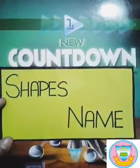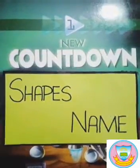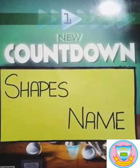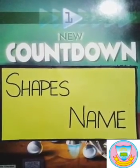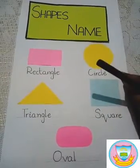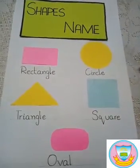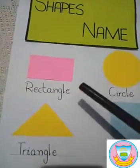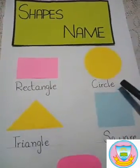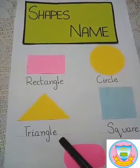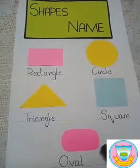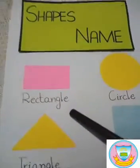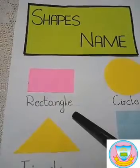Assalamu alaikum students, this is our third lecture of Countdown for Class One. In today's lecture we will discuss shapes. I have cut some basic shapes to show you: rectangle, circle, triangle, square, and oval. Rectangle — students, rectangle has four sides.